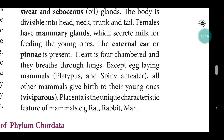All other mammals give birth to their young ones — they are viviparous. The placenta is the unique characteristic feature of mammals. Through the placenta, all nutrients pass from mother to child. We develop inside the uterus, and this structure is the placenta. Examples include rat, rabbit, and man.